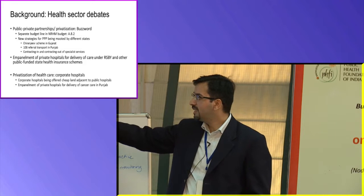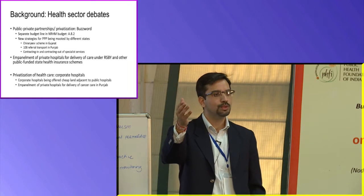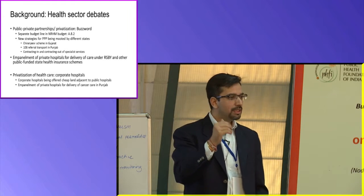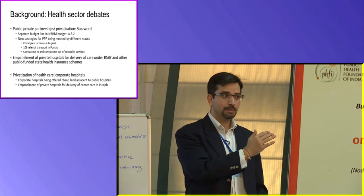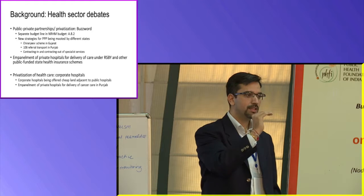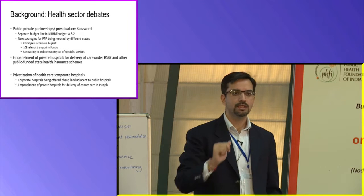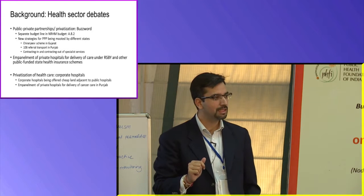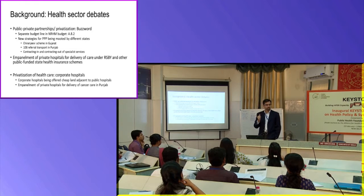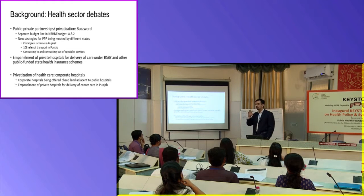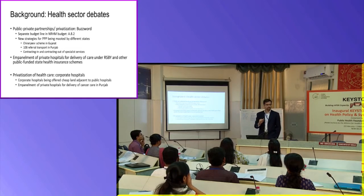There are other state-specific schemes: Maharashtra has its own scheme, Tamil Nadu has the Kalaignar scheme, Andhra Pradesh has the Aarogya Sri scheme. Himachal Pradesh topped up RSBY saying 30,000 is too less — we will provide an additional 1,50,000 from our side. And in most of these situations, a lot of the impaneled providers are from the private sector.